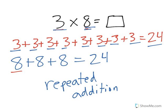The same is true for the bottom problem. Each of these 3 groups has 8 for an answer of 24. Repeated addition will get the same answer as multiplication.